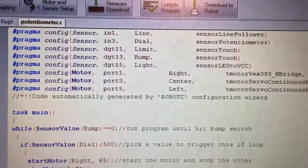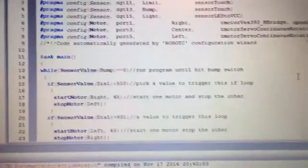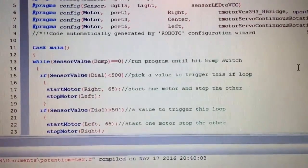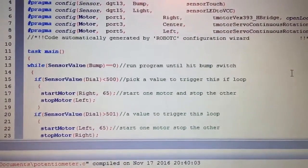While sensor value bump equals zero means run that program until we hit the bump switch, because I wanted an off switch.